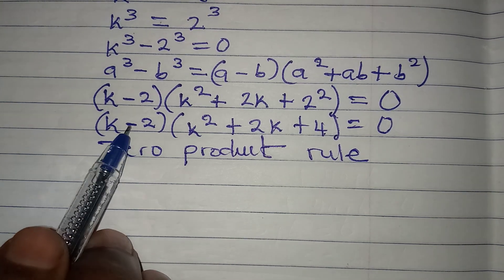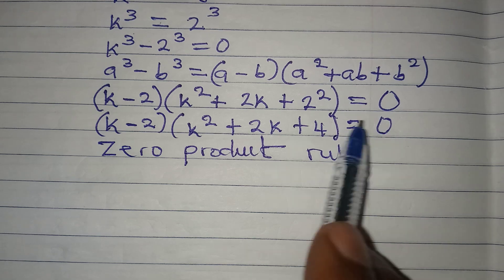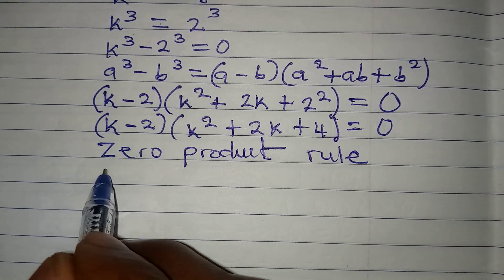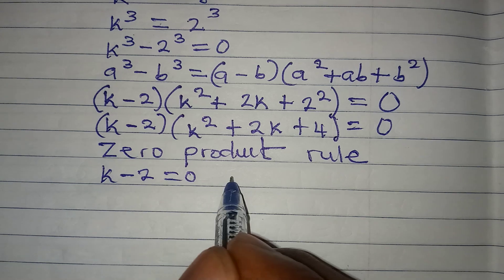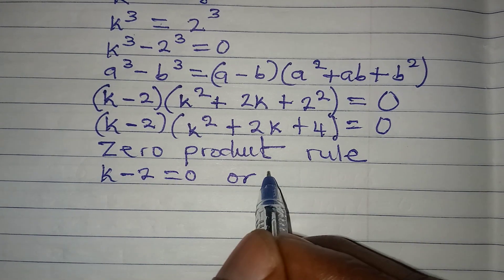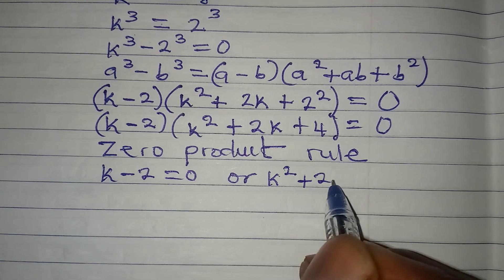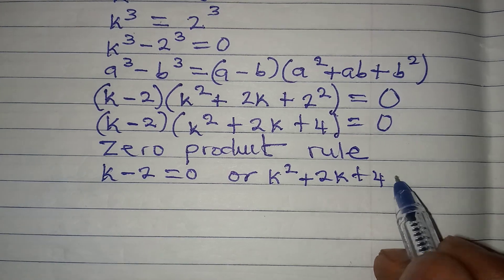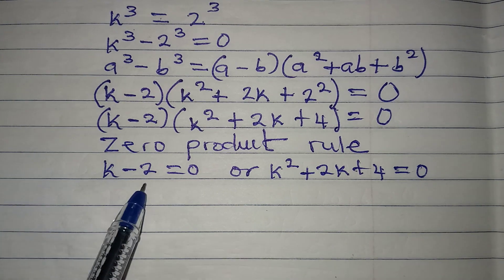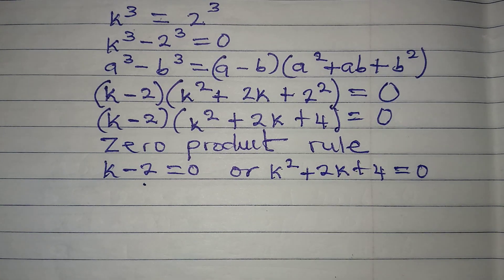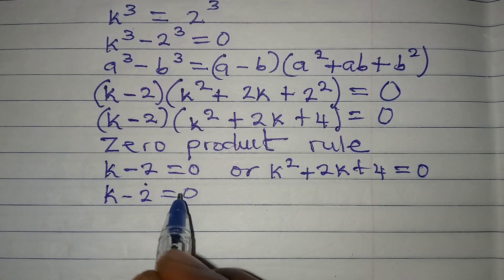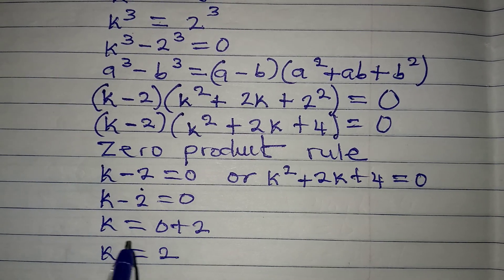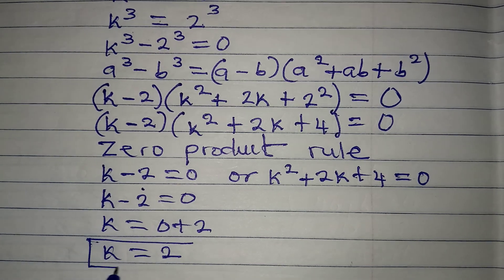And the zero product rule says, this is either equal to 0 or this is equal to 0. And this is because we are multiplying this and this to get 0. So k - 2 is equal to 0 or this quadratic expression, which is k² + 2k + 4. Now this is a quadratic expression, but we are going to equate it to 0. So now we have a linear equation and a quadratic equation. From the linear equation, which is k - 2 equal to 0, k will be equal to 0 plus 2. And our k is equal to 2. So this can be called the first value of k.